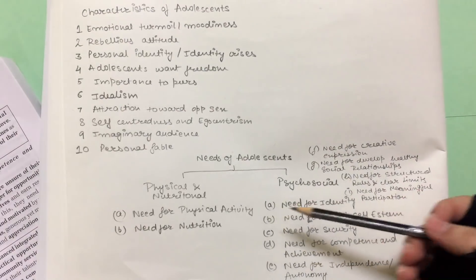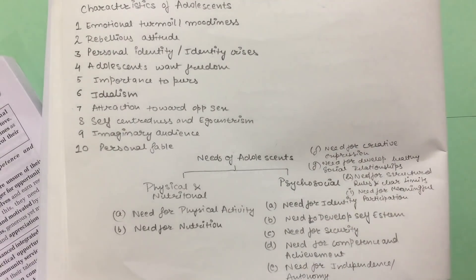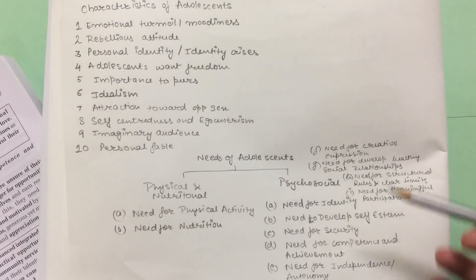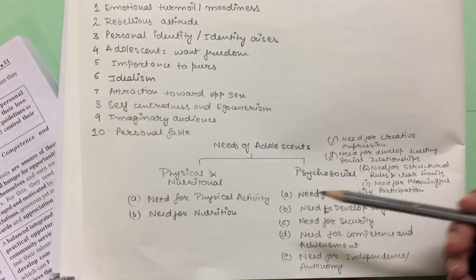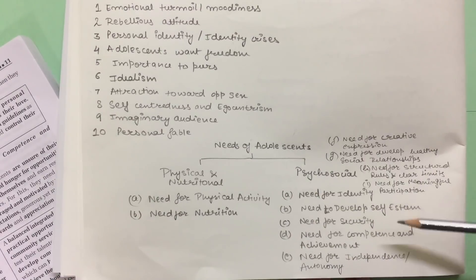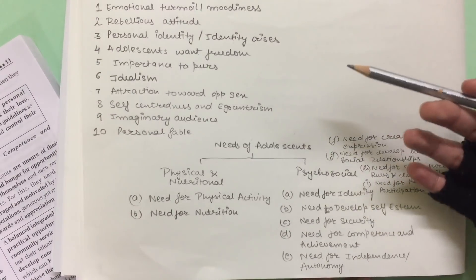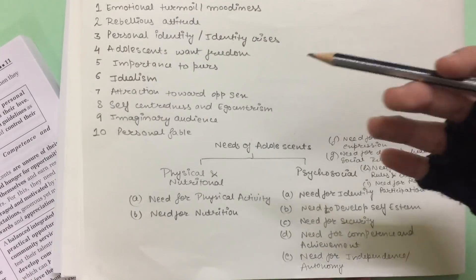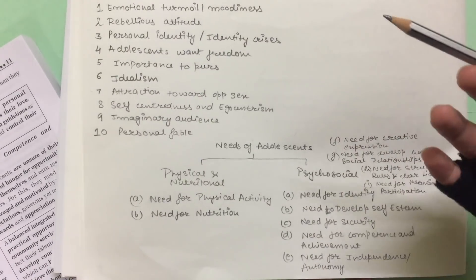Then there is the need for identity. Adolescents should do role-playing, know their family history, and search for role models. The need to develop self-esteem — they should participate in co-curricular activities, and parents should appreciate and motivate them.